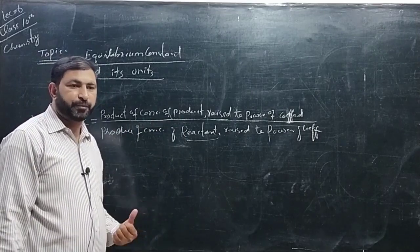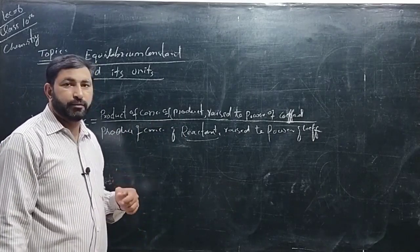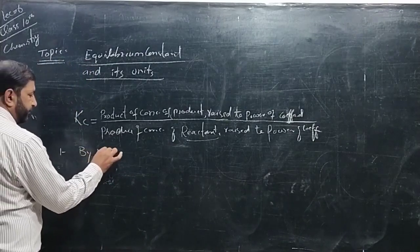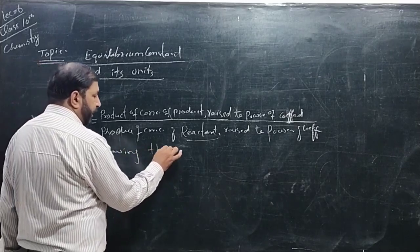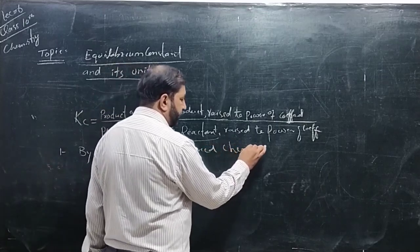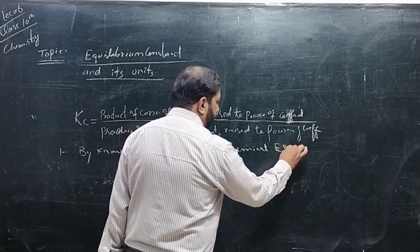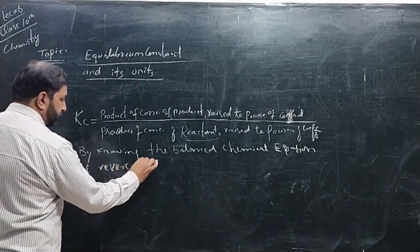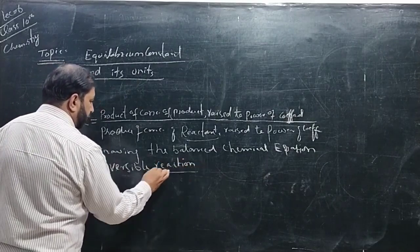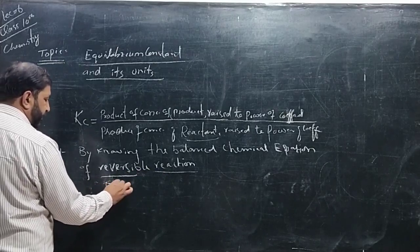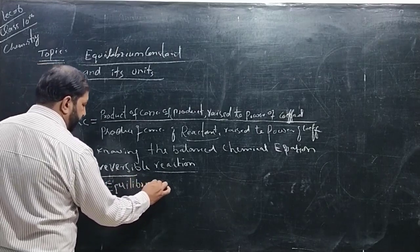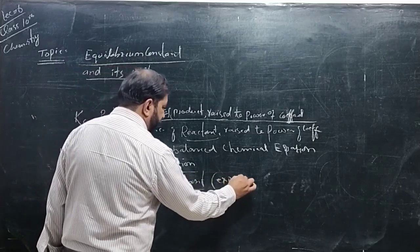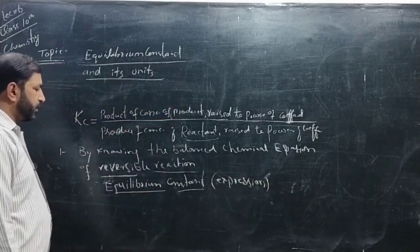If we want to write the equilibrium constant expression, as we have discussed before, we can find it by knowing the balanced chemical equation of a reversible reaction. By knowing the balanced chemical equation, we can write the equilibrium constant expression.